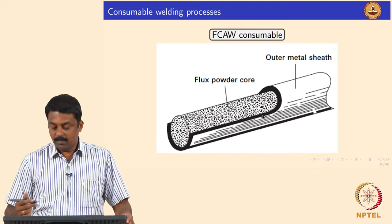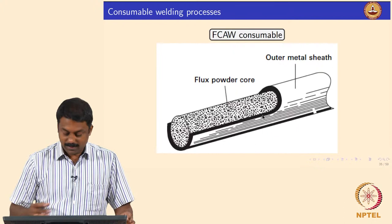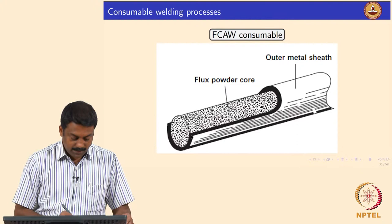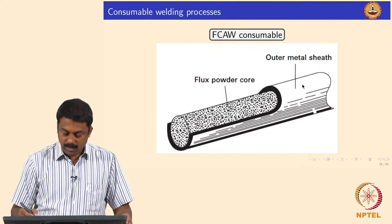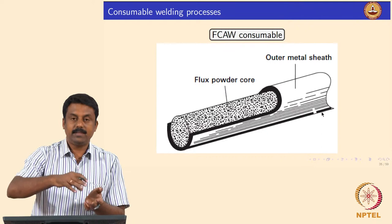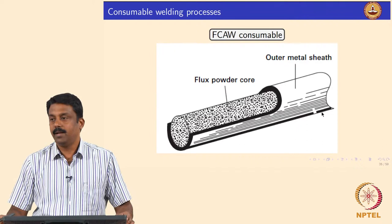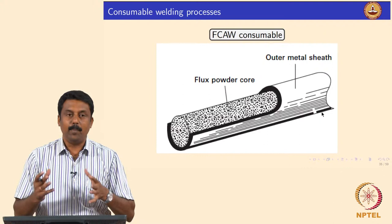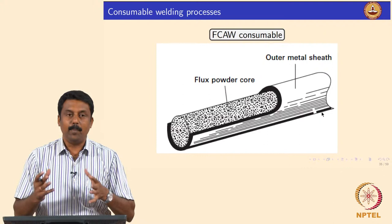This is the typical cross-section overview of the flux cored arc welding consumable. I will bring the electrode next class so you can see it yourself. In most cases, the flux inside is loosely packed — it is not compact and hard. You have the metal sheathing outside, and you pack the flux inside. The process of making it is very simple: you have a sheet, fill the flux, then fold it. In most cases, the seam is not welded — you have mechanical deformation — and if you tap it, the flux comes out.